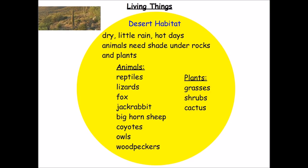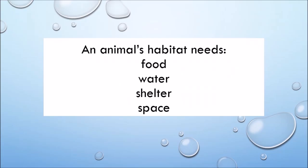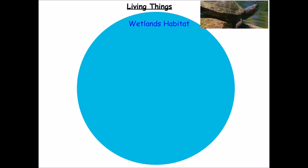The desert was hot and had little rain. Did the desert habitat have all four essential parts? Yes! Next, we'll travel to a wetlands habitat. I'll take notes while we watch.